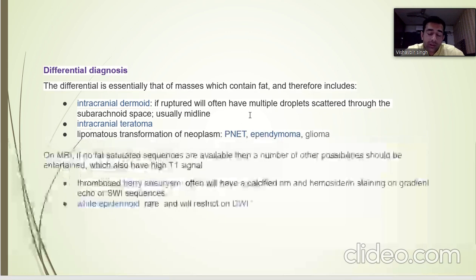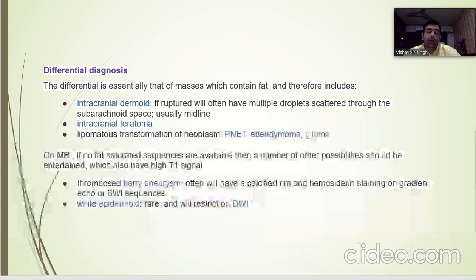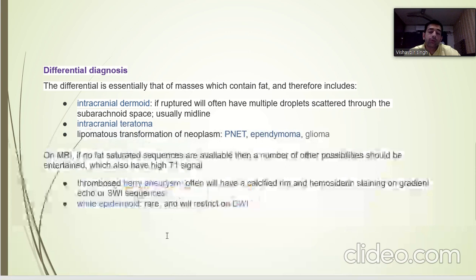The differential diagnosis includes other fat-containing masses: intracranial dermoid, intracranial teratoma, or lipomatous transformation of neoplasms such as PNET (primitive neuroectodermal tumor), ependymoma, or glioma. On MRI, if fat-sat is not available, other possibilities with high T1 signal must be considered, for example a thrombosed basilar aneurysm, or white epidermoid which is rare and will show diffusion restriction on DWI images. These are my references.